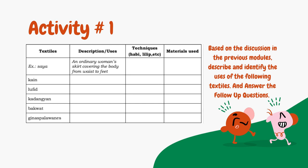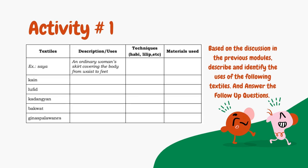For your first activity, based on the discussion in the previous module, describe the identity used in the following textile. For the second column, write the description and uses of saya, kain, lufid, kadangyan, bakwat, and ginaspala. For the third column, write the techniques used. And for the fourth column, write the materials used in saya, kain, lufid, kadangyan, bakwat, and ginaspala.